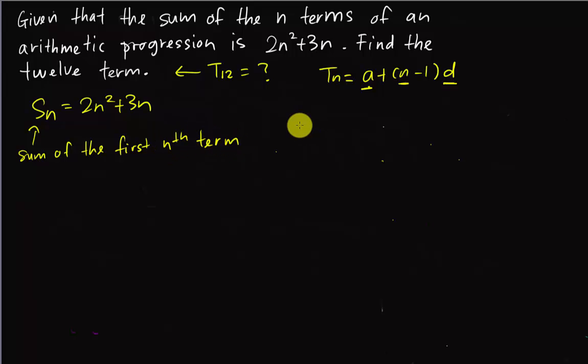What is the meaning of sum of the first n term? If I say something like S5, S5 basically means T1 + T2 + T3 + T4 + T5. It means sum from the first term to the fifth term - you have to add every term.